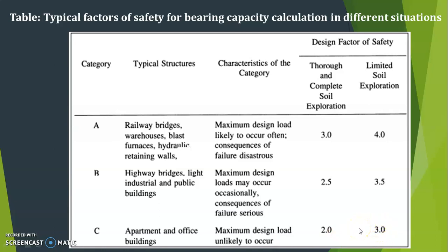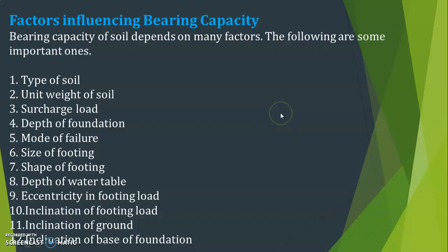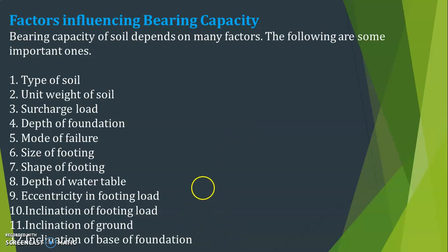Next, let us see the factors influencing bearing capacity. There are different factors on which bearing capacity of soil depends: type of soil, unit weight of soil, depth of foundation, mode of failure, size of footing, shape of footing, depth of water table, eccentricity in footing load, inclination of footing load, inclination of ground, and inclination of the base of the foundation.